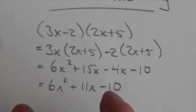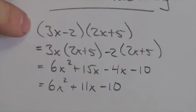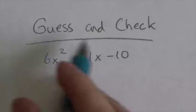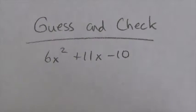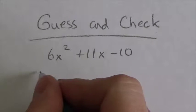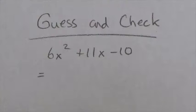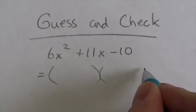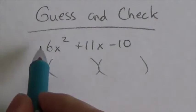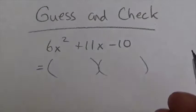Now, combining like terms: positive 15 and negative 4 gives us 11x, with negative 10 at the back. The fact that those two get combined is what causes some difficulty, because it's hard to undo that addition. So now we're going to look at how to go backwards and get right back to the beginning. There are several methods that can be used to do this, and I'm going to show you how to factor using guessing and checking.